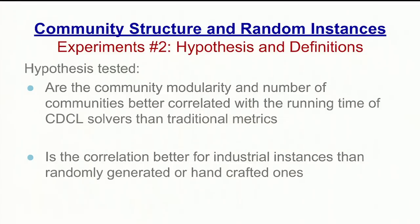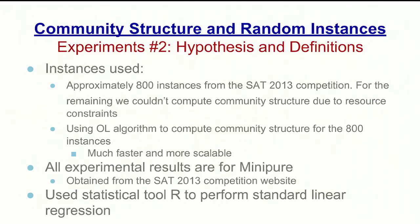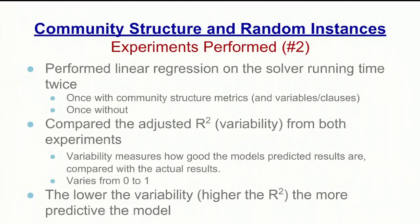The second experiment tested the hypothesis that the number of communities and the modularity of a formula is better correlated with solver running time than traditional metrics such as number of clauses and number of variables. We also wanted to know if the correlation was better for industrial instances versus randomly generated or handcrafted ones. We used approximately 800 instances from the SAT 2013 competition, used the online community detection algorithm, and took timing data from the competition for the MiniSAT solver. We performed a standard linear regression in R twice — once including community structure metrics along with variables and clauses, and once without — and compared the adjusted R² values. A large number of instances timed out (approximately 60%), so we used the log of time rather than standard time, and standardized the data to have a mean of zero and a standard deviation of one.